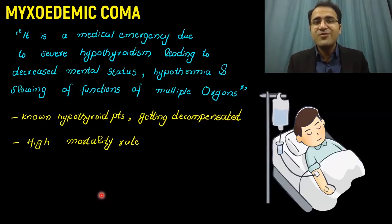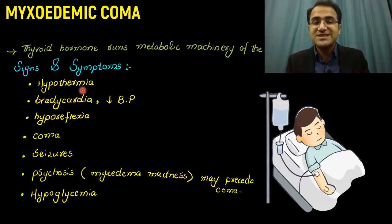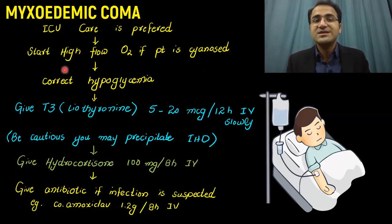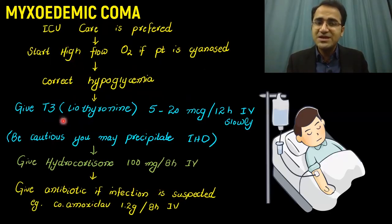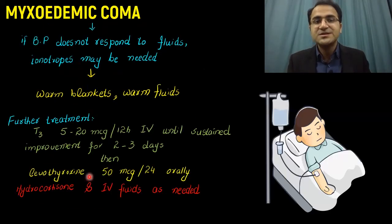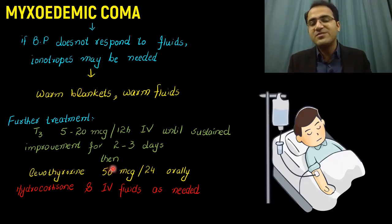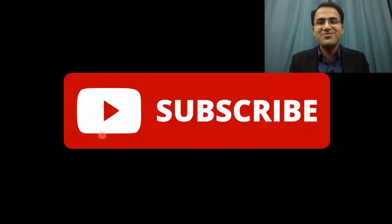In summary, we talked about what myxedema coma is and the signs and symptoms with which it presents, then the precipitating factors, then ICU care: high-flow oxygen, correcting hypoglycemia, giving liothyronine, giving hydrocortisone, antibiotics if needed. If blood pressure does not improve, give inotropes, warm blankets, and warm fluids. Then shift the patient to levothyroxine 50 micrograms orally once daily.